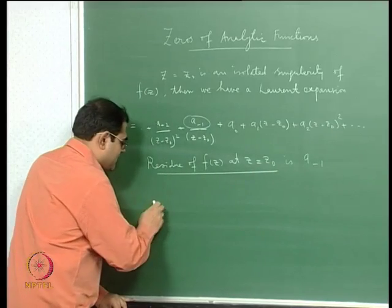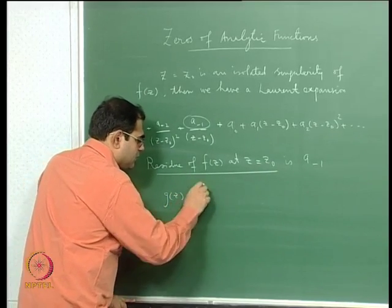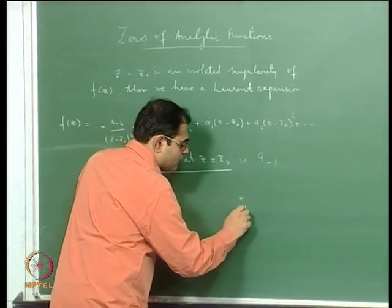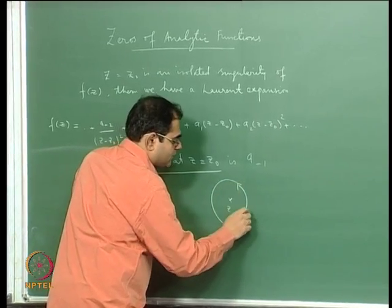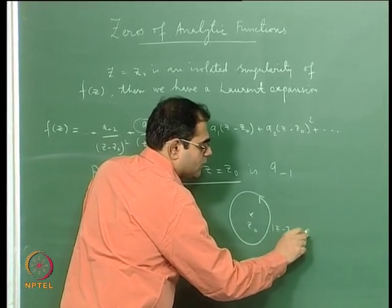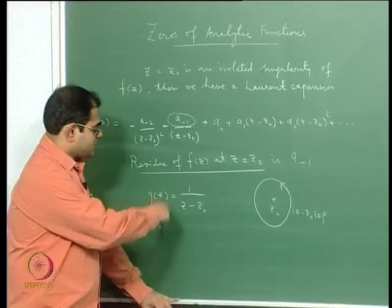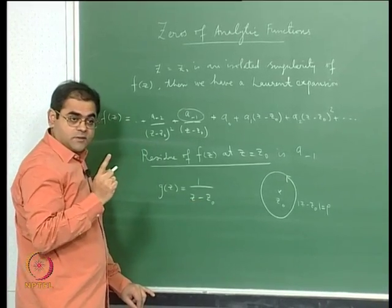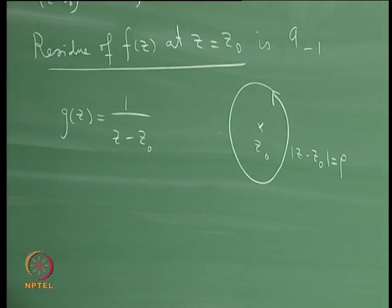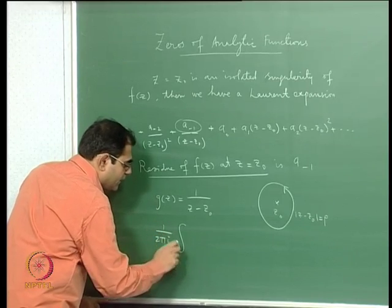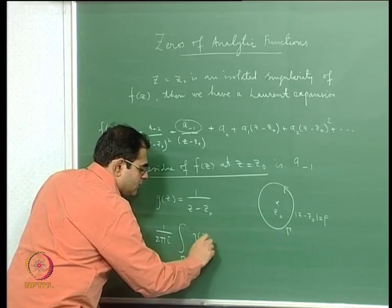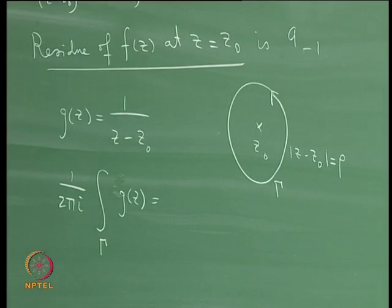Take a very simple example: g(z) = λ/(z−z0). There is z0 on the complex plane, and if you draw a circle |z−z0| = ρ, this is an analytic function except at z=z0 everywhere else the denominator never vanishes. z0 is a zero of order 1, so it is a simple pole — a pole of order 1 is called a simple pole. If you calculate (1/2πi) times the integral over this circle γ of g(z)dz, you end up with 1, or more generally with λ.